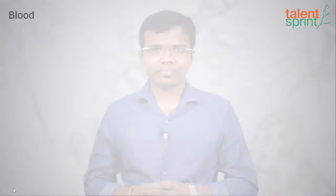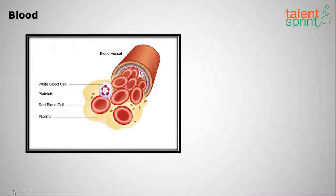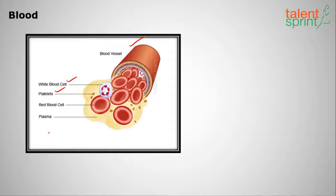Hello everyone, welcome to Talent Sprint. In this series of biology lessons, we shall deal with the topic called blood. In this picture, you can see a blood vessel. It has white blood cells, which are white in color, platelets which are useful in the clotting of blood, red blood cells in red color, and plasma.